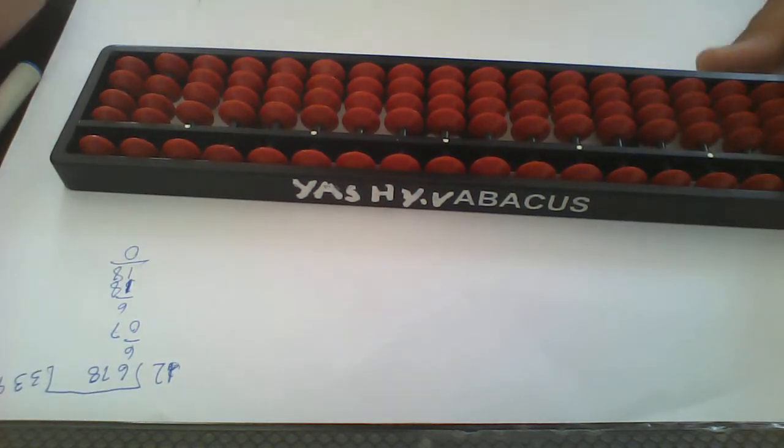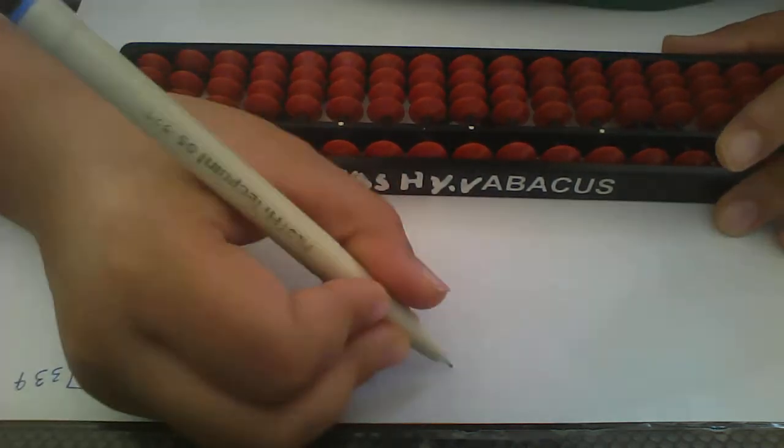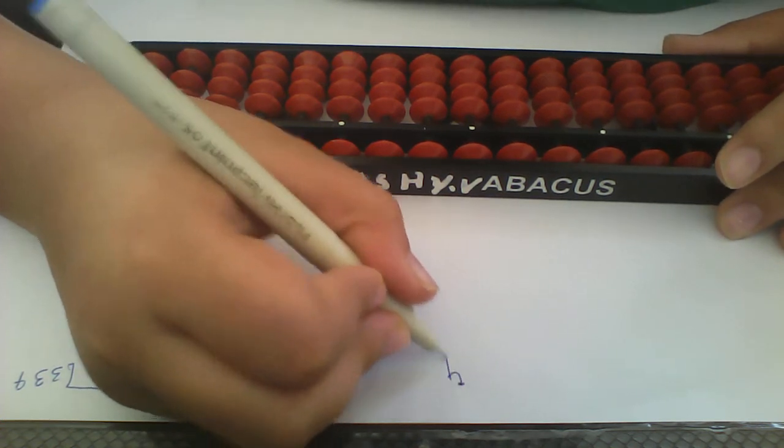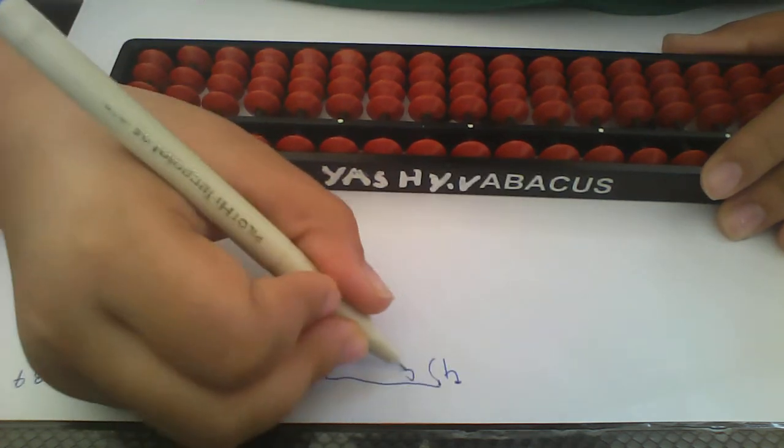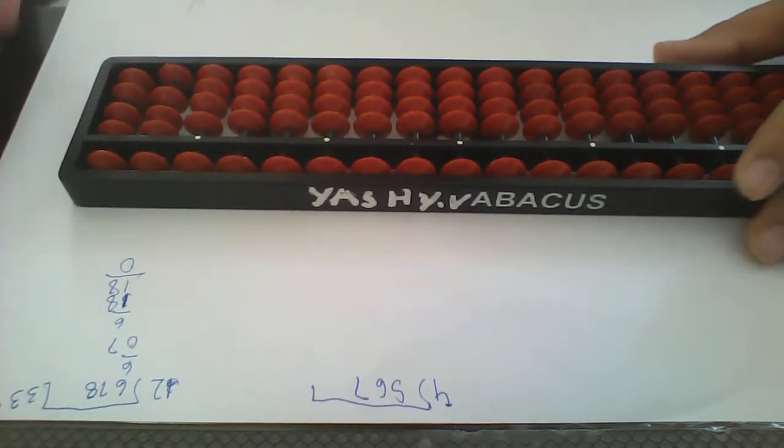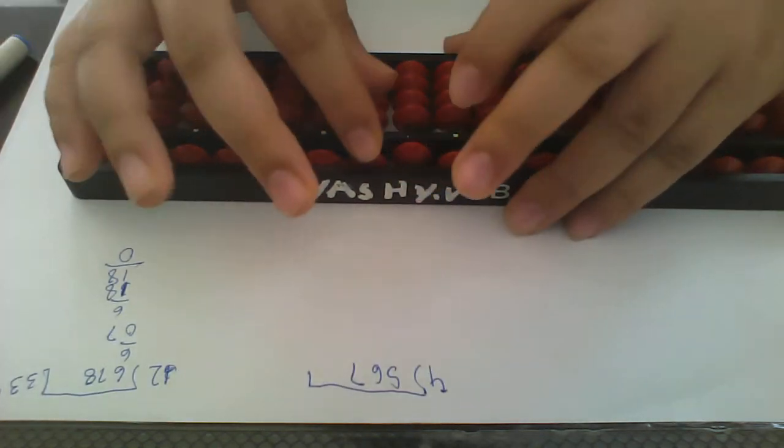Why did we write? Now one more sum. 567 divided by 4. And now 567.